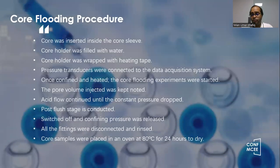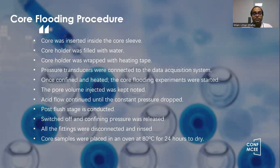What we do is we put the core inside the core holder, fill the core holder with water with the help of a syringe pump, then inject the acid with the help of the HPLC pump, and heat the core holder with the help of a heating tape. When the experiments of the core flooding process are completed, we remove the connections and we get our core sample — the reacted core sample — and dry it.